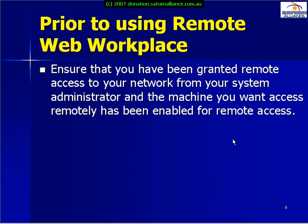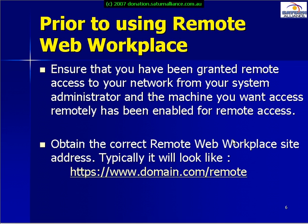Prior to actually using Remote Web Workplace you need to ensure a number of conditions are met. You need to ensure that you've been granted remote access to the network by your system administrator, and that the machine you want to use has also been enabled for remote access. You need to obtain the Remote Web Workplace URL, which typically will appear like: https://www.domain.com/remote. The domain will normally always be HTTPS and have /remote at the end.